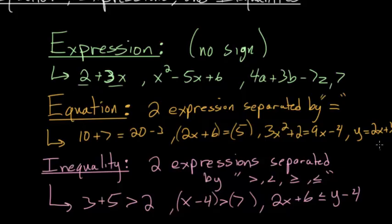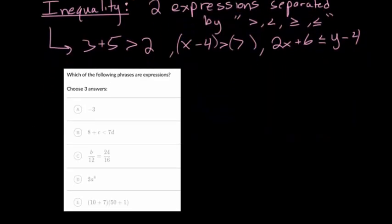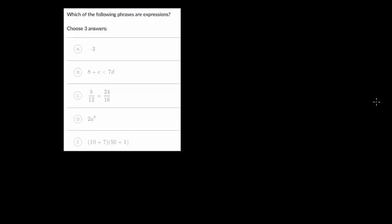With the definitions out of the way, let's start looking at some different example problems. For the first one, we need to know which of the following phrases are expressions. Remember, expressions do not have a sign. Something like negative 3 is an expression. But this one has an inequality sign, so it's an inequality. This one has an equal sign, so it's an equation. These two without any sign are the expressions.